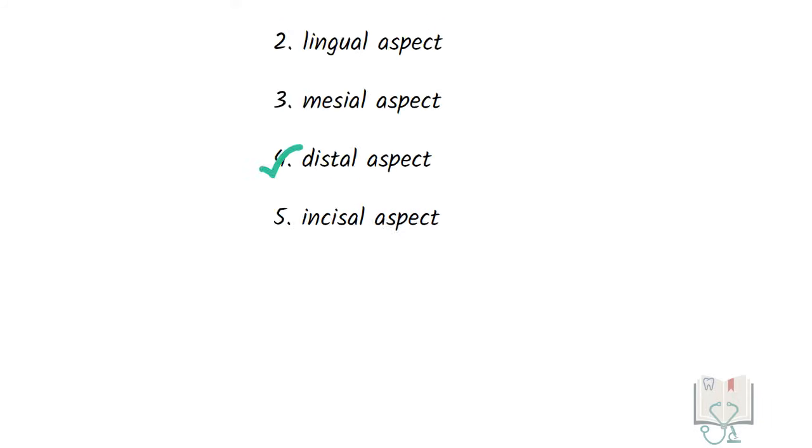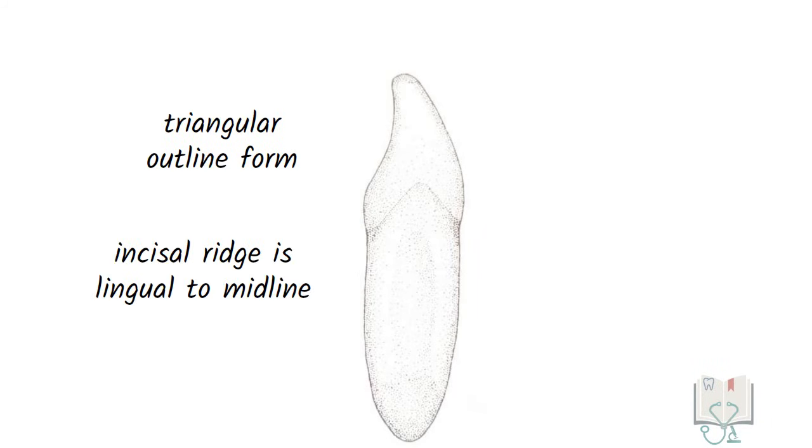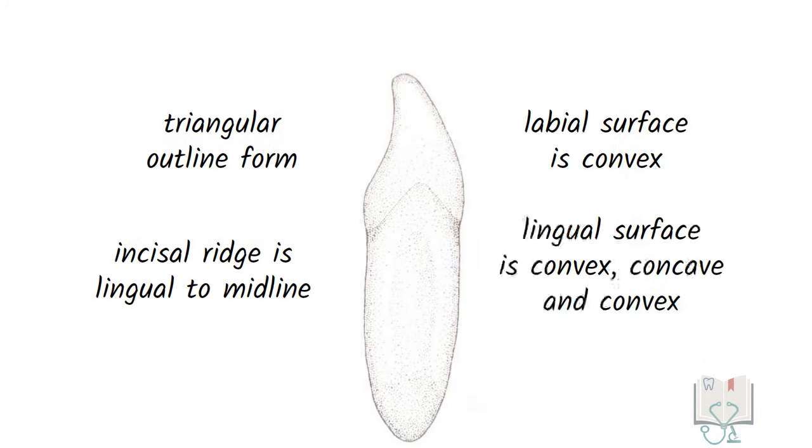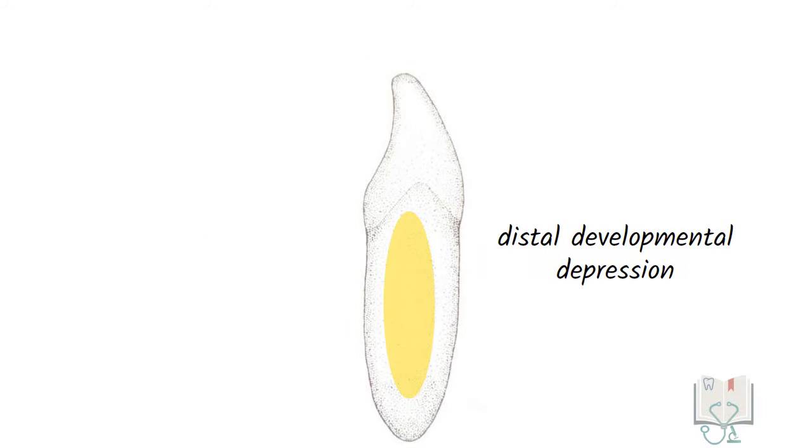Next, the distal aspect. All the features from the mesial aspect are same from the distal aspect as well. Though, the distal developmental depression on the root is deeper than the mesial developmental depression.